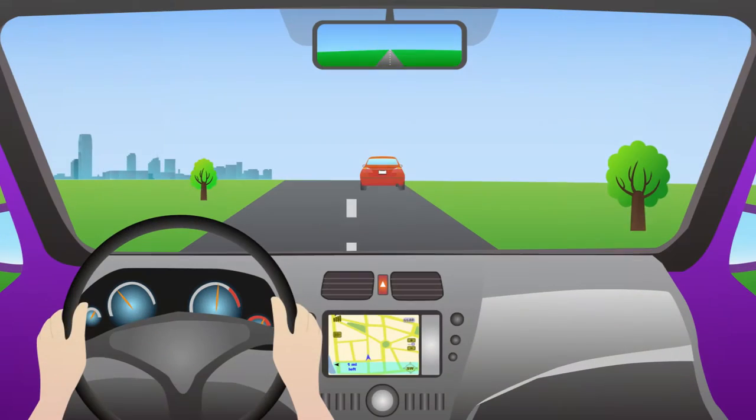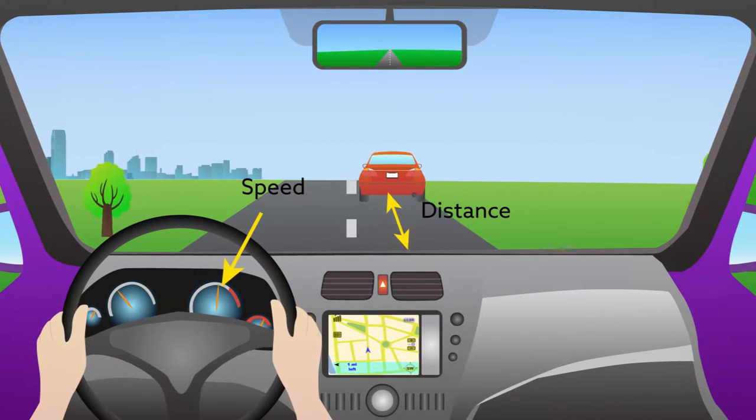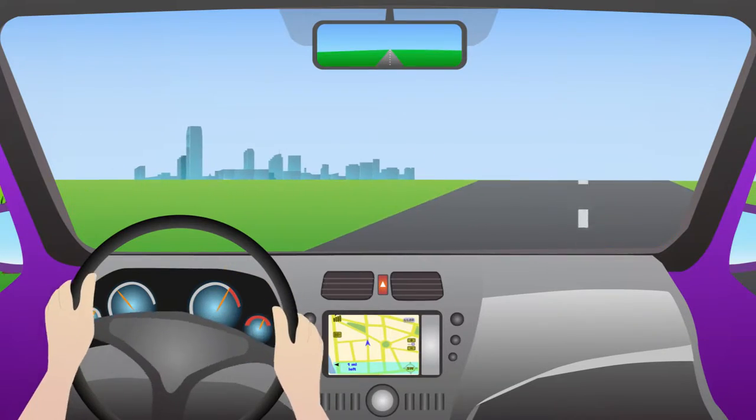Take driving, for example. People monitor speed and distance, but mostly drive by feel for where the car is and where they want it to go.